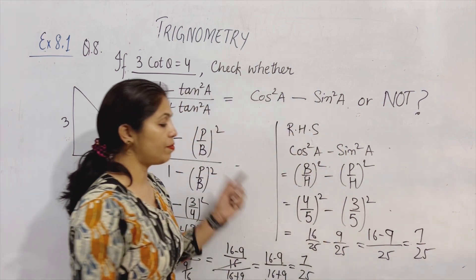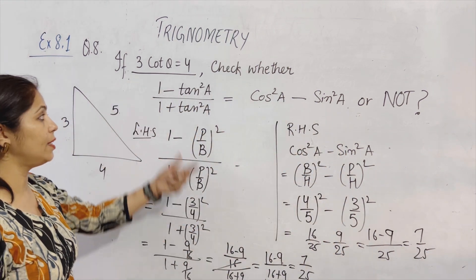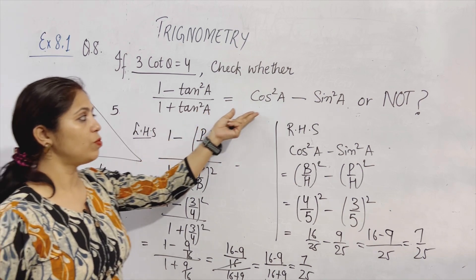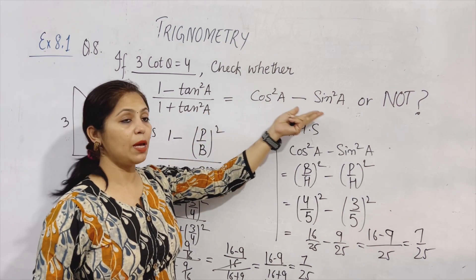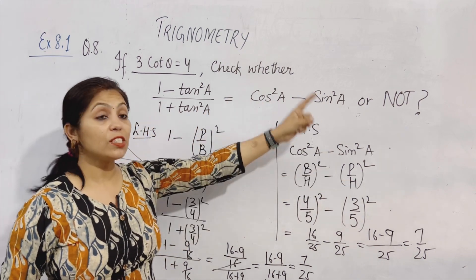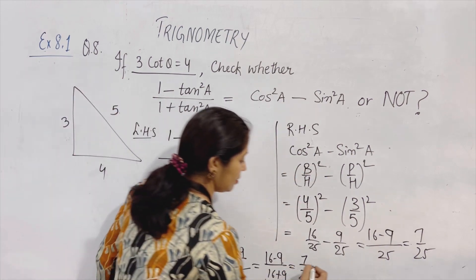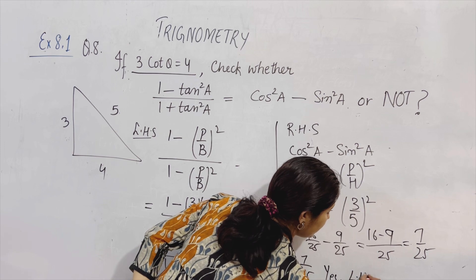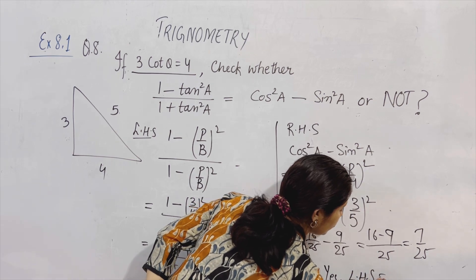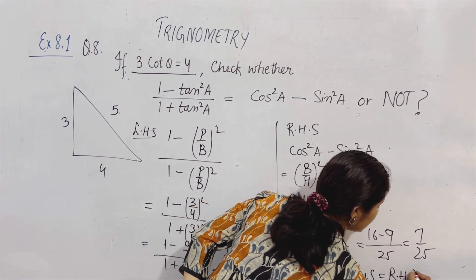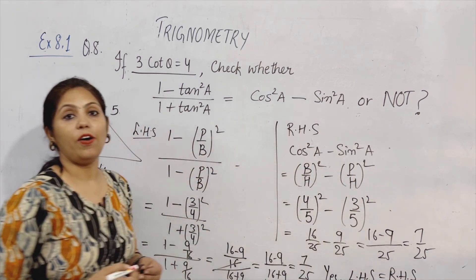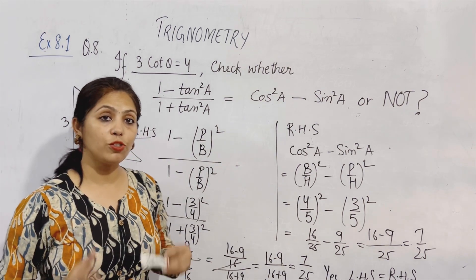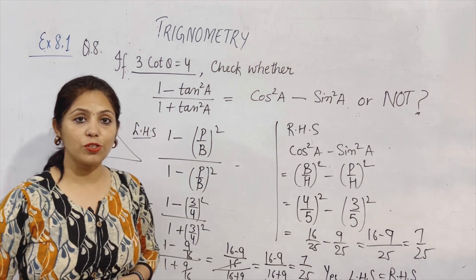तो बताईए — left-hand side, right-hand side के equal है या नहीं? 1 minus tan square theta upon 1 plus tan square theta is equal to cos square A minus sin square A — yes! Left-hand side is equal to right-hand side. Alright. So please note down this question. I hope you are enjoying solving this kind of questions.